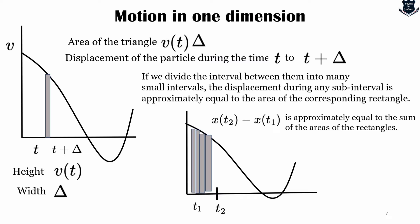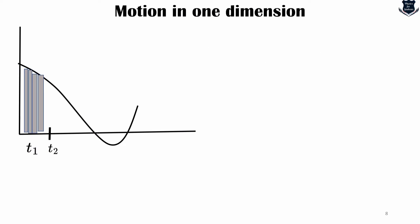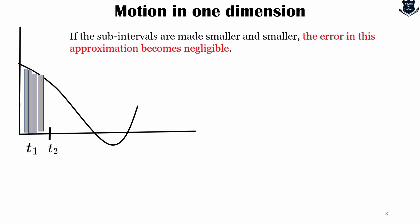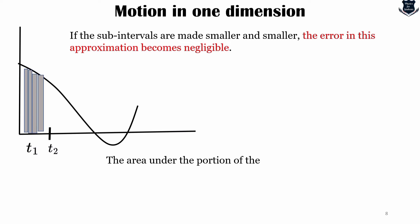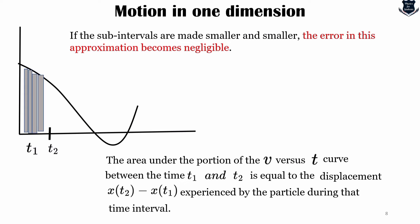If the subintervals are made smaller and smaller, then the error in this approximation becomes negligible. We see that the area under the portion of the v versus t curve between t1 and t2 is equal to the displacement x(t2) minus x(t1) experienced by the particle during that time interval.